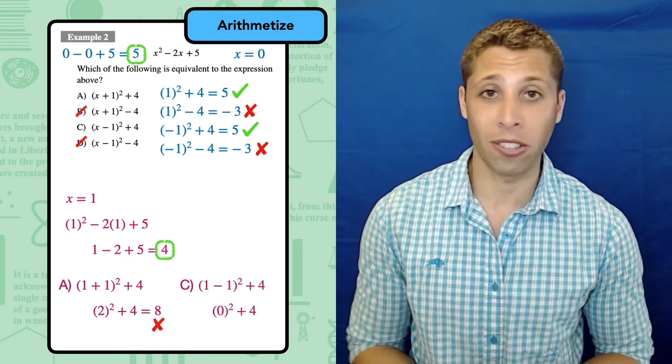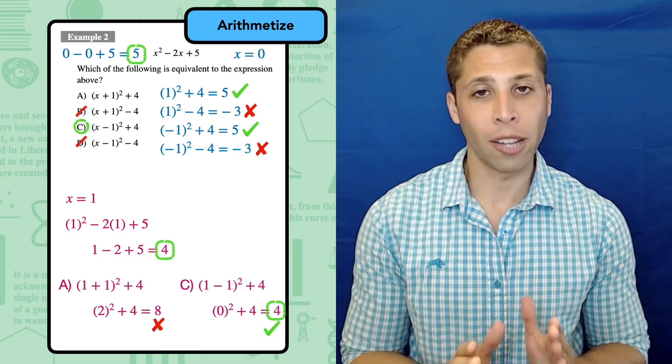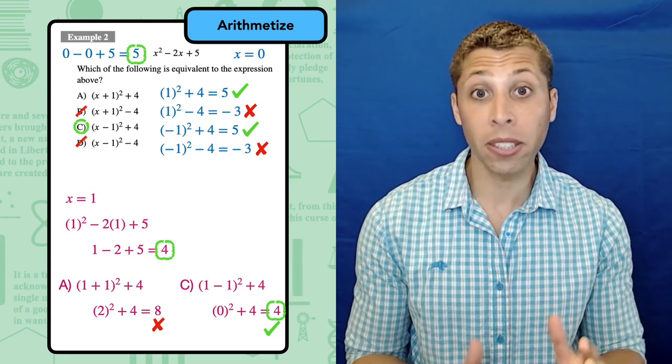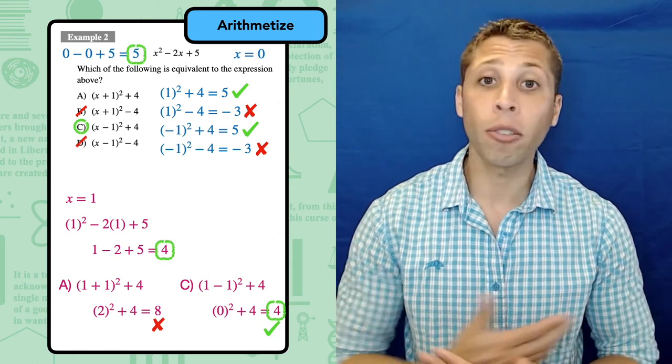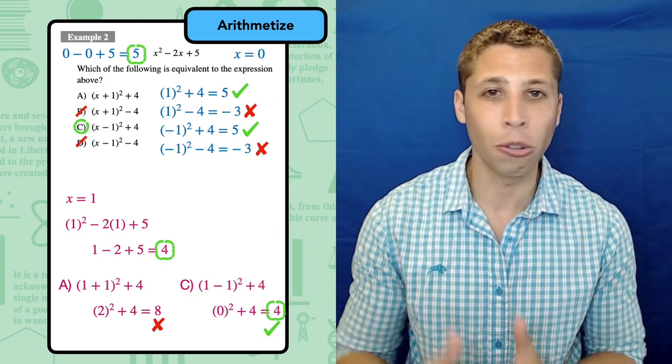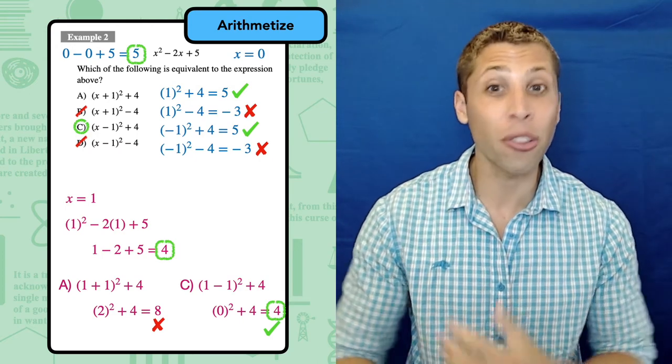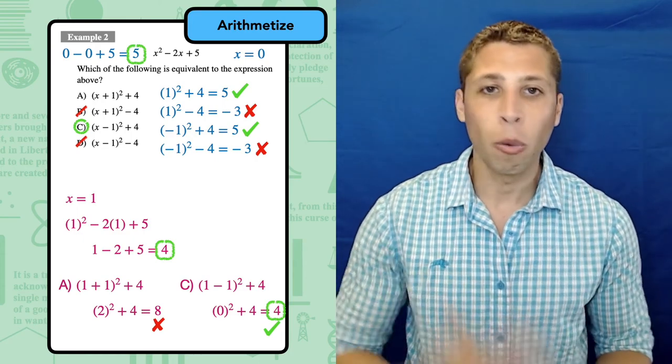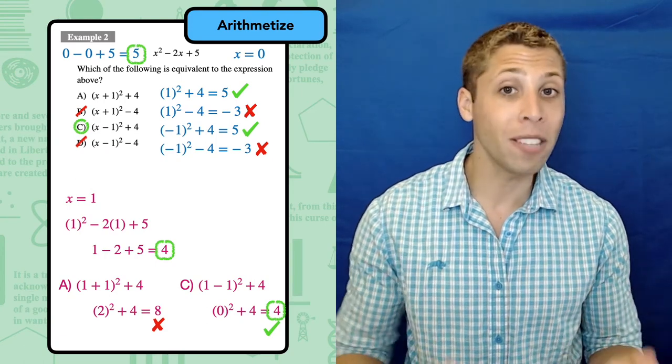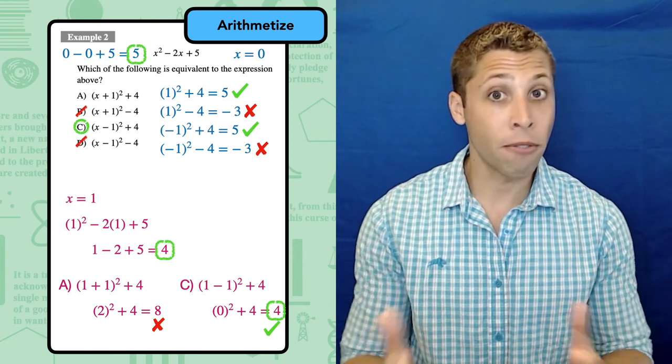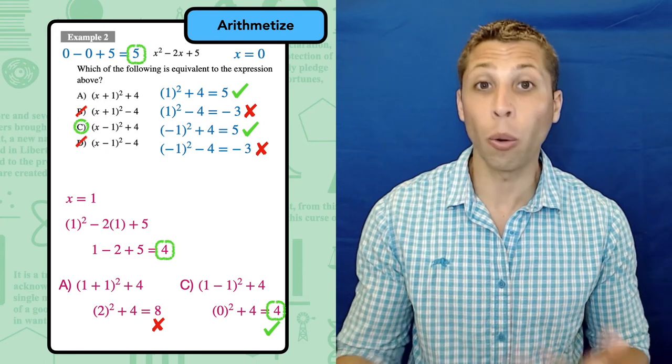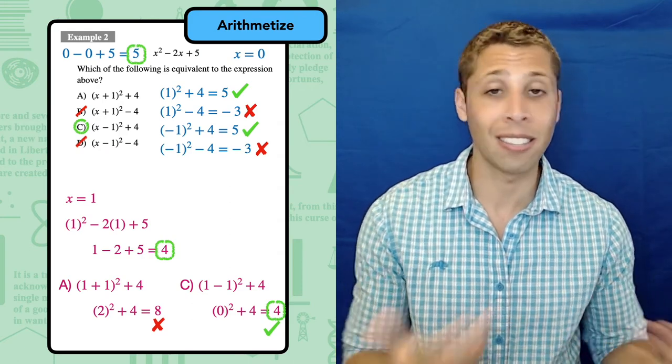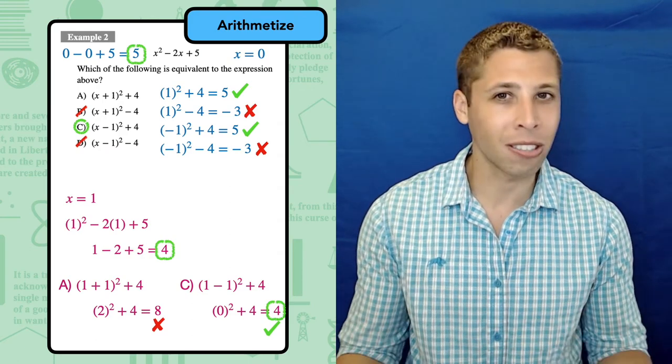Now there are some tutors who will tell you that you should never pick zero or one because of what just happened. They're terrified that you'll arithmetize with a number that gives you multiple answer choices. I disagree very strongly with that advice. Zero and one aren't numbers that you should avoid. They are the best numbers to pick for the vast majority of questions. Yes, it's true that they sometimes give you multiple possible answers, but who cares? We still eliminate a few wrong answers, and then we can always pick a new number to finish the job. Even if zero and one fail, they fail quickly, so we don't waste a lot of time doing annoying arithmetic. Plus, even the more complicated numbers like two and three could give us multiple choices that seem correct. So avoiding one and zero doesn't actually solve the main problem with arithmetizing.